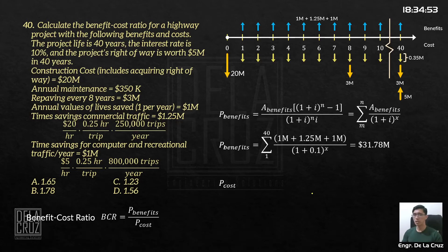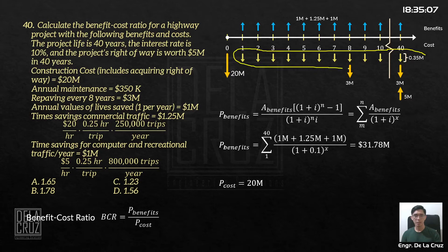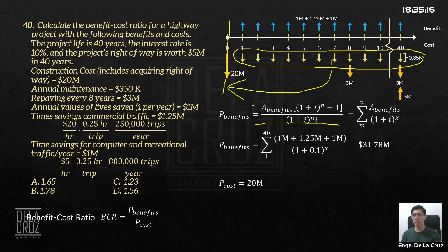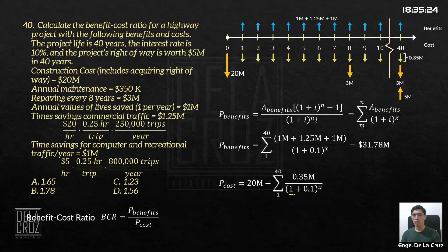For the present worth of the cost — this is the more challenging part. The 20 million construction cost is already at present time, so no conversion needed. The 0.35 million (350,000) annual maintenance: use the annuity/summation formula — 0.35 million over (1 + i)^x, summed for 40 years.